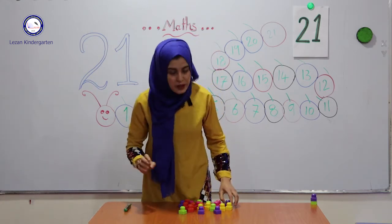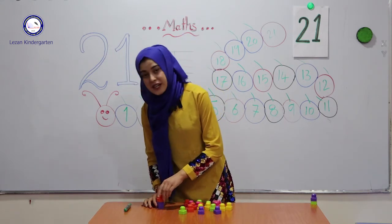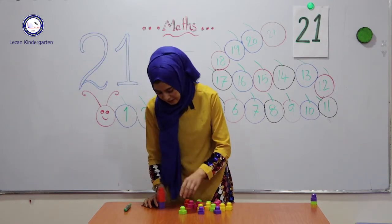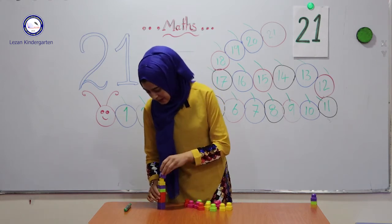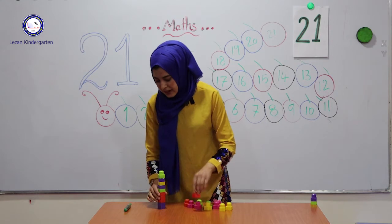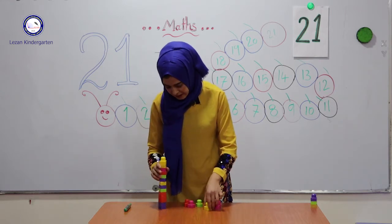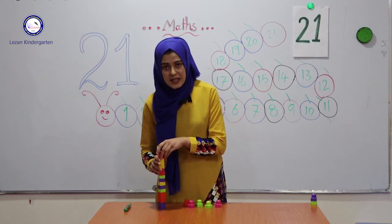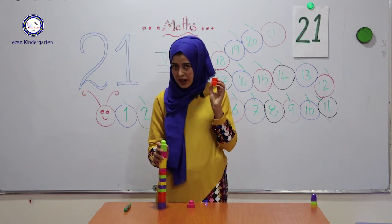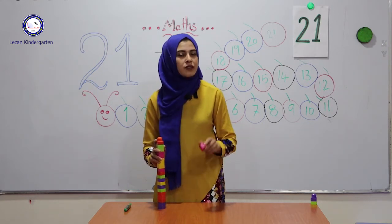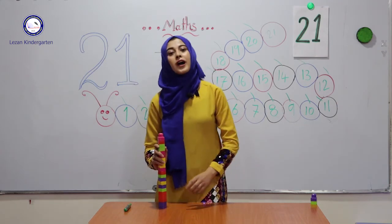Now let us put 21 mulcanoes together. Are you ready? Start. 1, 2, 3, 4, 5, 6, 7, 8, 9, 10, 11, 12, 13, 14, 15, 16, 17, 18, 19, and then we have 20. After 20, which number comes after 20? 21. It becomes 21. We have 21 mulcanoes.